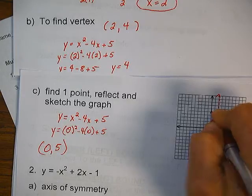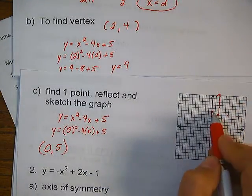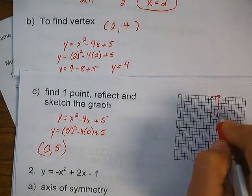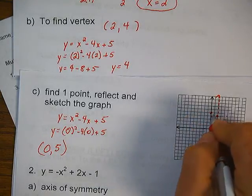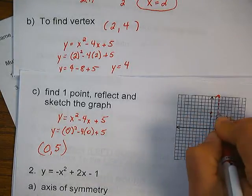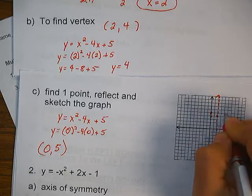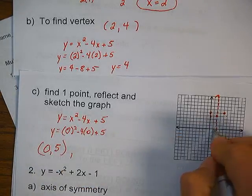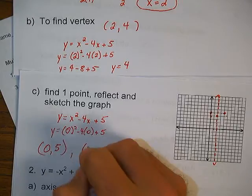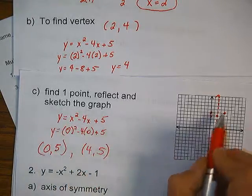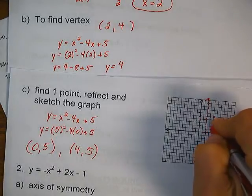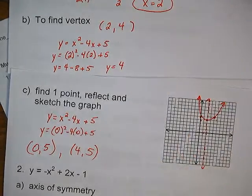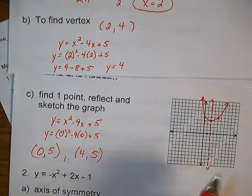So we have a point at 0, 5. We said what's on this side is exactly the same as the other side. How far is this from the axis of symmetry? 1, 2 — so I go 2 on the other side. There's another point there. Now that I have the vertex and two other points, I can just sketch my parabola. It doesn't have to be perfect right now — I just need to see three points.